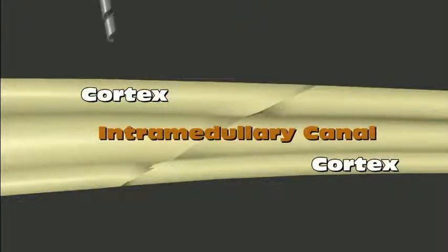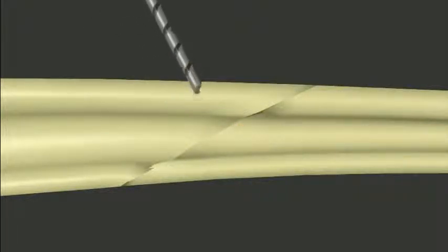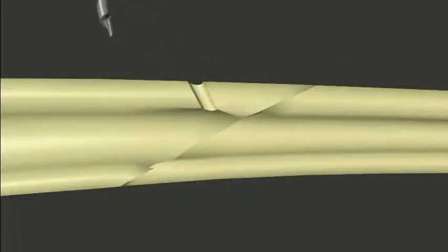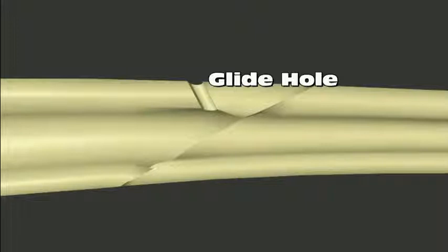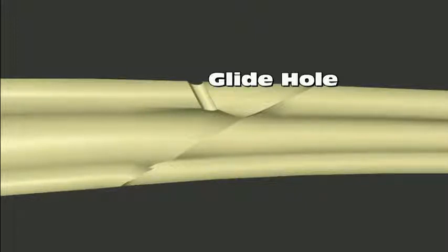A glide hole is drilled first. The glide hole should be perpendicular to the fracture and should be just wider than the threads of the screw. This is so that the screw glides through the first cortex without biting into it.